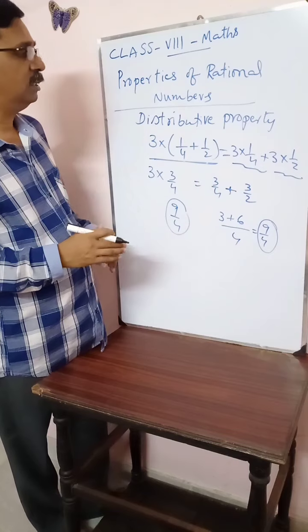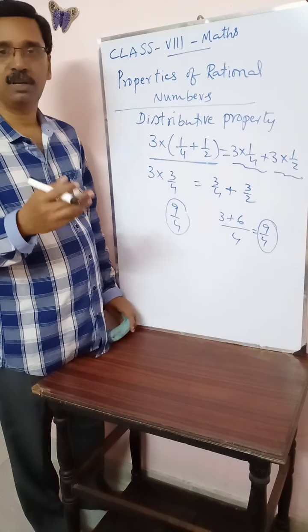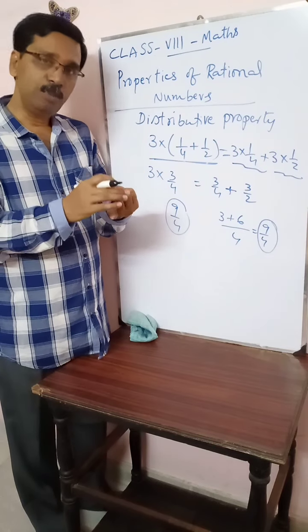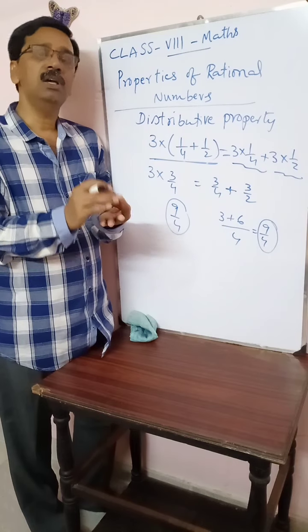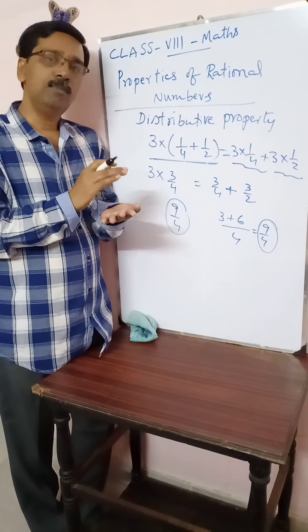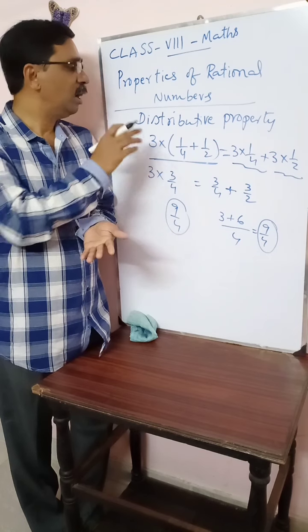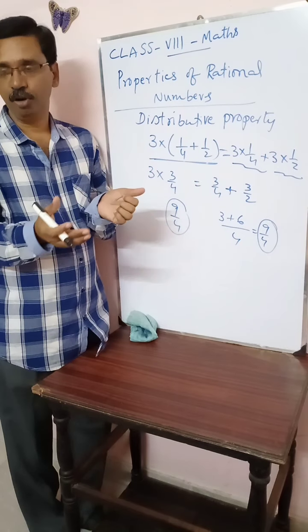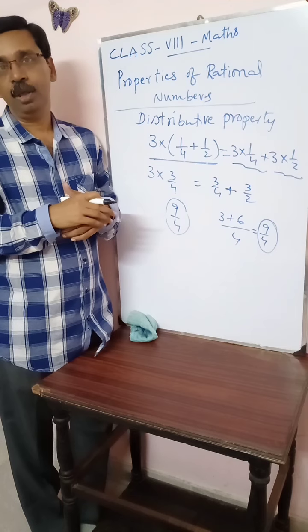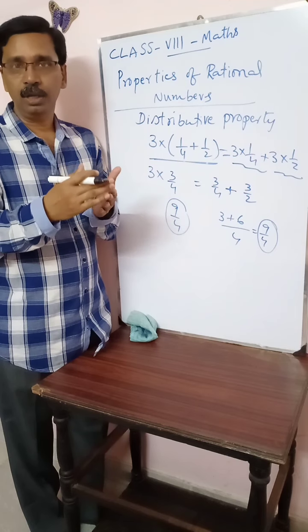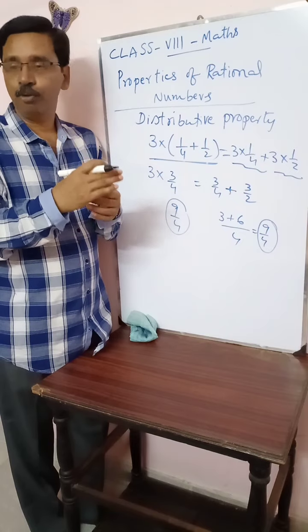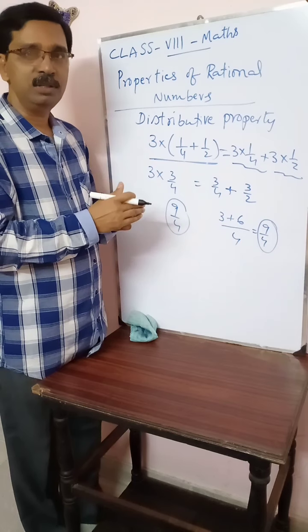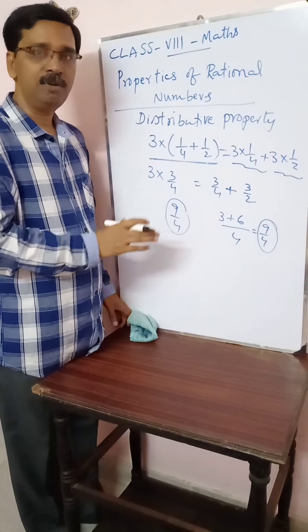So, these are all the properties we have learned: closed property, commutative property, associative property, zero property and multiplicative identity, and finally distributive property. Using these properties, we can solve different problems from the textbook exercise. Now go ahead and do problems 1 to 4 from the textbook exercise, and in the next class we will see some more problems.